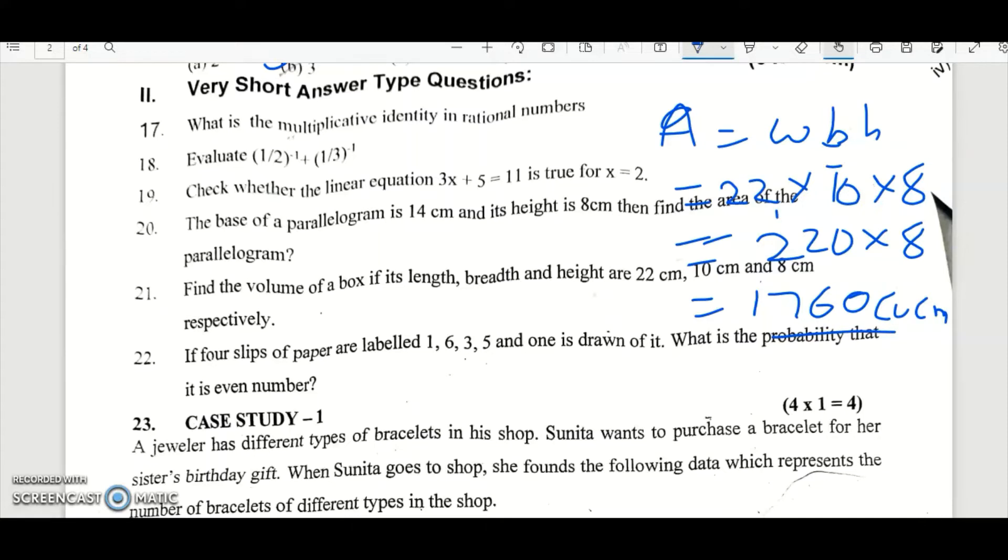So next one, the four slips. And one is drawn in it. What is the probability of an even number? So we have only one even number here. 6 is the only even number out of 4 papers. So the probability will be 1 out of 4, that is 1 by 4.